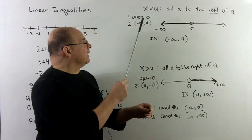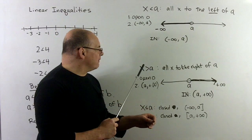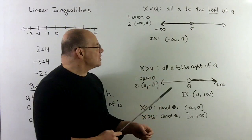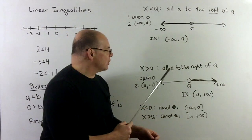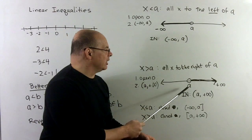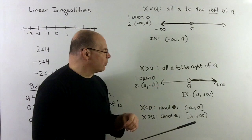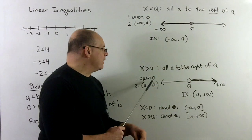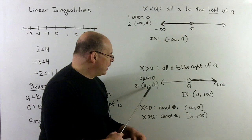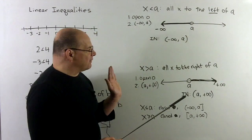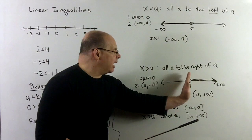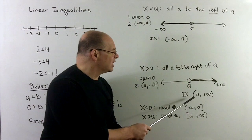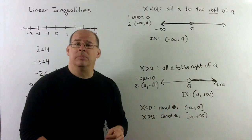If the inequality goes the other direction — x greater than a — we read this as all x to the right of a. Likewise, we put a circle at a and shade everything to the right, going off to plus infinity. Again, we have the open circle. For interval notation going from left to right, we start at a — not keeping a, so parenthesis — and then that goes to plus infinity: (a, +∞).